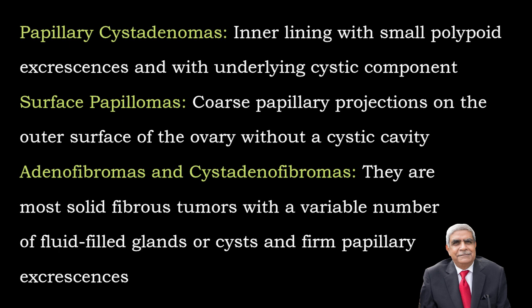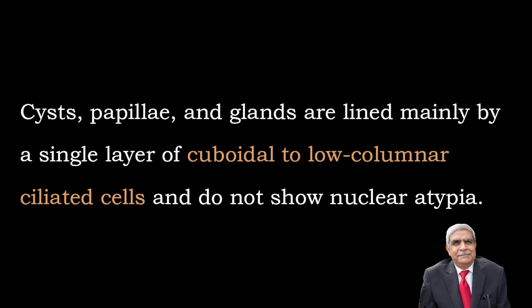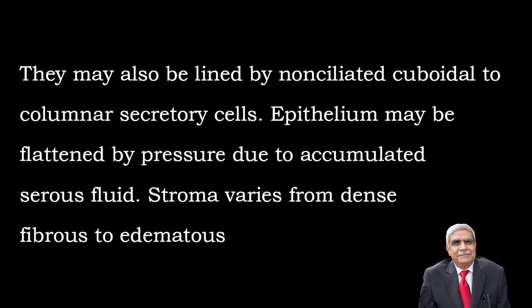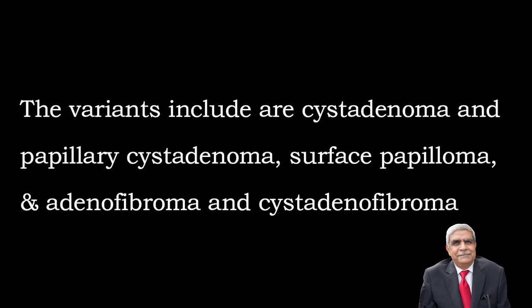Histologically, serous neoplasm epithelium mimics the epithelium of the fallopian tube. Cysts, papillary structures, and glands are lined mainly by a single layer of cuboidal to low columnar epithelium which is ciliated and without significant nuclear atypia, but can also be lined by non-ciliated cuboidal to columnar secretory epithelium. Due to the pressure effect of accumulated serous fluid, the epithelium becomes flattened. The stroma, which is dense and fibrous, may become edematous. Rarely, psammoma bodies are present. Variants include cyst adenoma, papillary cyst adenoma, surface papilloma, adenofibroma, and cyst adenofibroma.